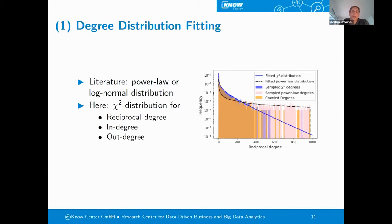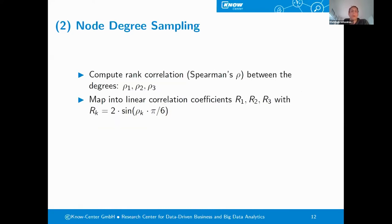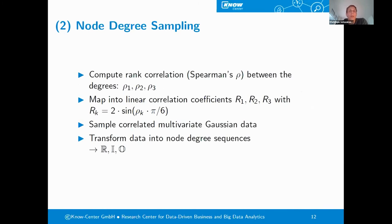Now that we have fitted these degree distributions, we are going to the second step, where at first, we are also extracting the rank correlations from the crawled graphs between the degrees and map it into the linear correlation coefficients. With these linear correlation coefficients, we then sample correlated multivariate Gaussian data. In a couple of steps, we transform the data into node degree sequences for the nodes, which leads us to the sequences for the reciprocal degree, the in degree, and the out degree for each node.